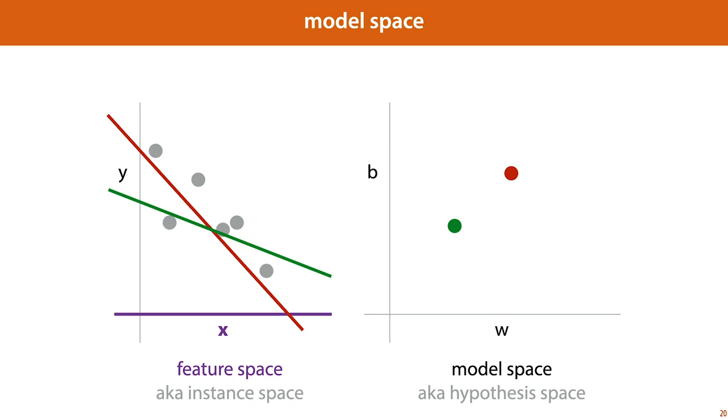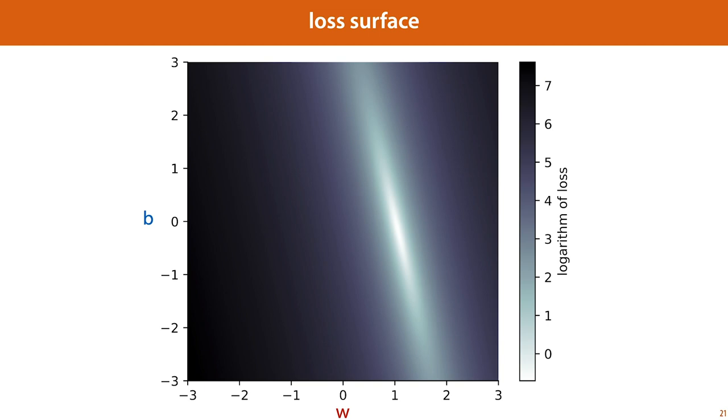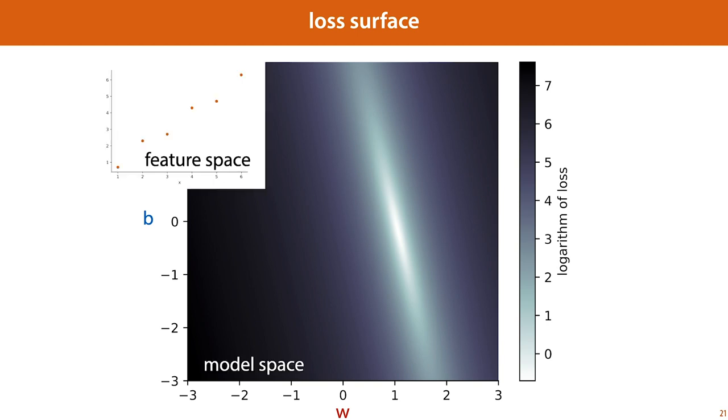A loss function gives us a surface over our model space, and since we have a model space in this case with two parameters, a two-dimensional model space with parameters w and b, we can actually plot what our loss surface looks like for the data that we showed earlier. Here, the black points are points with high loss, and the lighter the points get, the lower the loss gets. We've actually plotted the logarithm of the loss just so that the details of the loss surface show up a little better. So this is a summary of our task: search the model space for a model that gives us low loss.